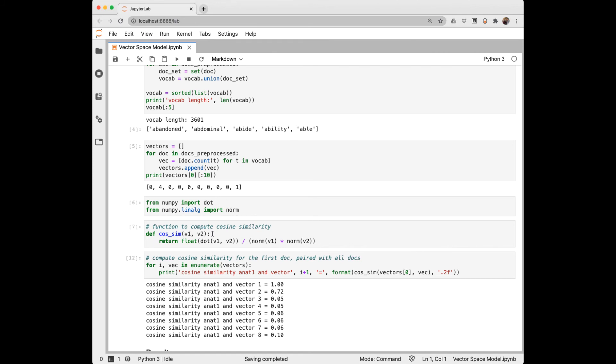I'm going to use numpy to help me with the math. I made a function for cosine similarity. Given two vectors, it will take the dot product divided by multiplying the norm of each of those. And now that I have my cosine similarity, I can just iterate over all of the vectors and compute the cosine similarity with the first vector. So the first vector with itself has a cosine similarity of one. And with the other half of the original document it came from, it has a very high cosine similarity. And the others are very low.